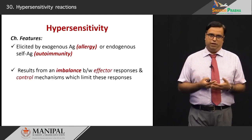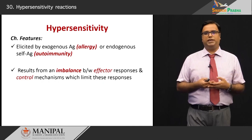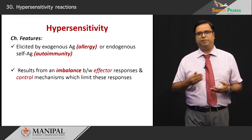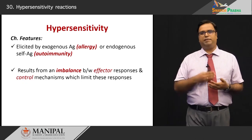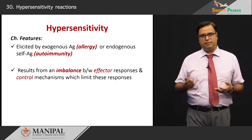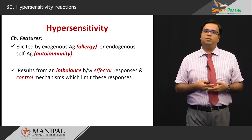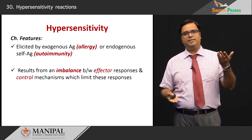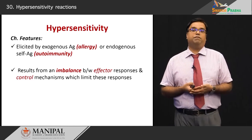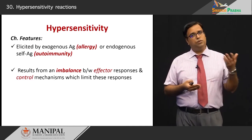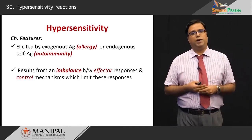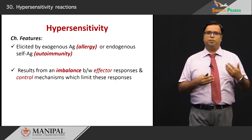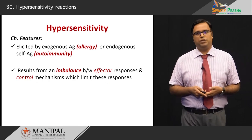What happens here is an imbalance between an effector response — which brings out your inflammatory reaction, cellular reaction, or cytokine release — versus the control mechanisms in play. That imbalance tilts the scale in favour of an effector response while the control mechanisms are very sparse, resulting in the body's immune system being on the overdrive.